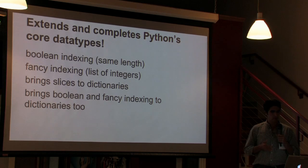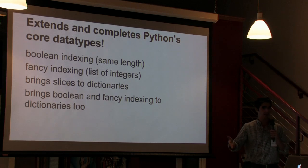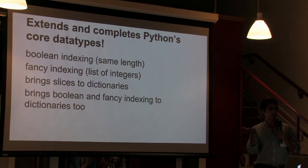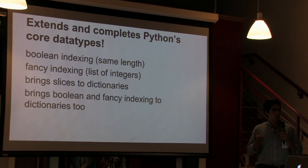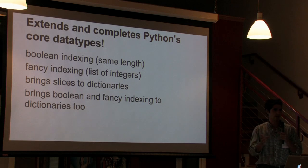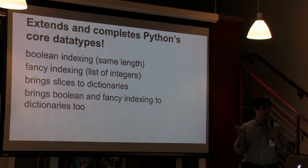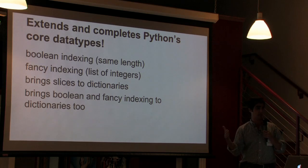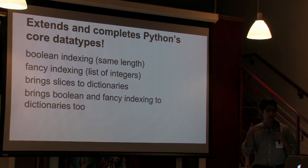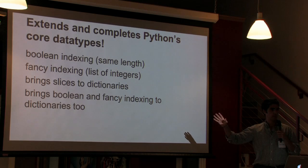What you should think of when you think of pandas is it's a very natural extension of the Python language — it's dramatically upgrading the indexing capabilities of Python. Where previously you had a limited ability to do slices in lists, now you can do slices in a dictionary-like object where the keys are anything you want, and you can take ranges of those things. That ends up opening the door for all this other capability.